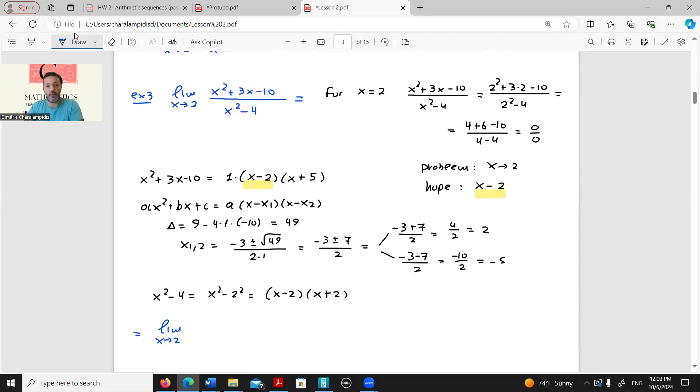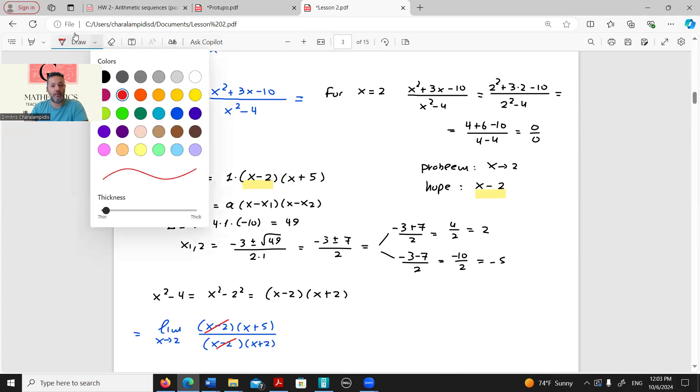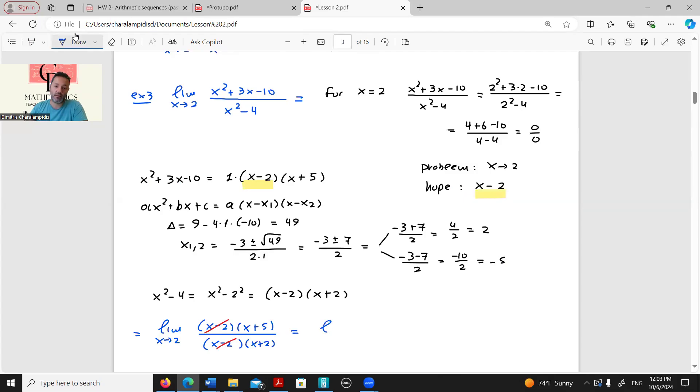Instead of x squared plus 3x minus 10, I can simply write that as x minus 2 times x plus 5 over x minus 2 multiplied by x plus 2. So these x minus 2s will be cancelled out, and we can continue with the rest. Limit of x tending to 2, x plus 5 over x plus 2, and now we can try to substitute again. 2 plus 5 over 2 plus 2 equals 7 over 4.